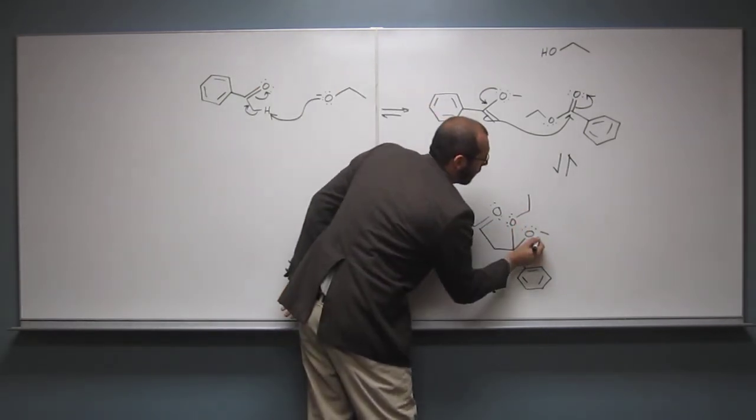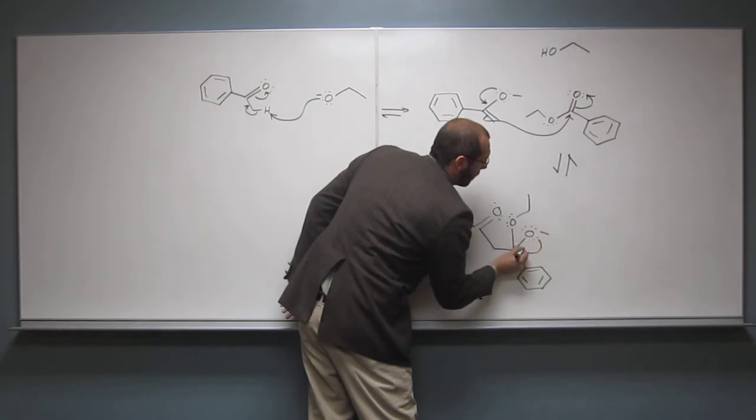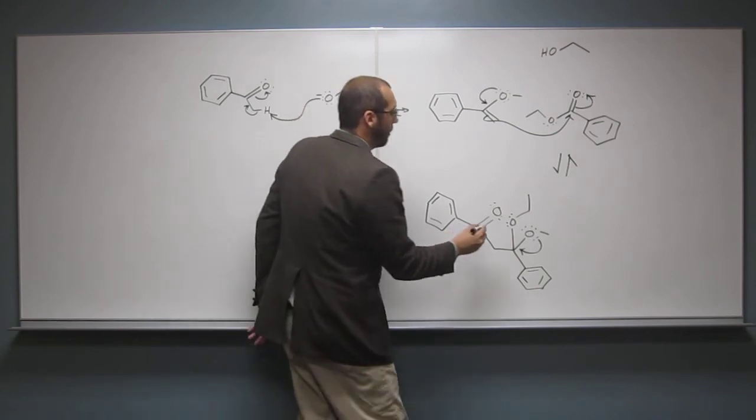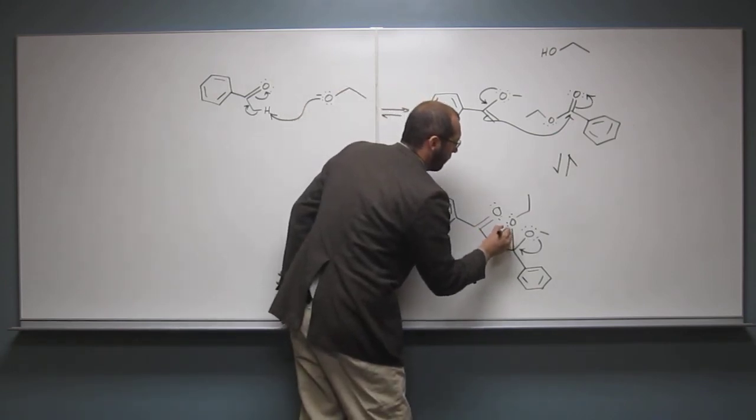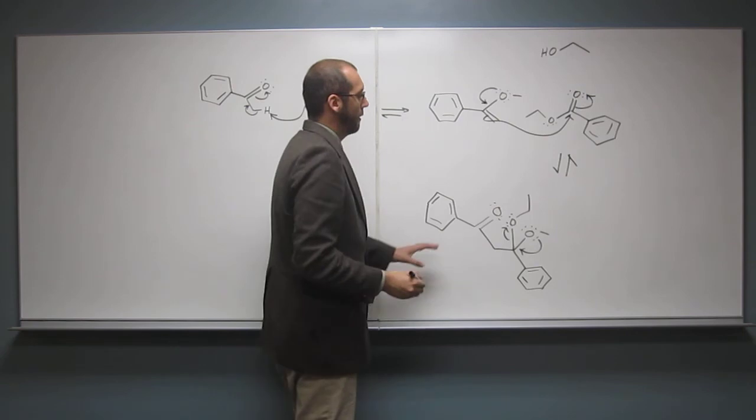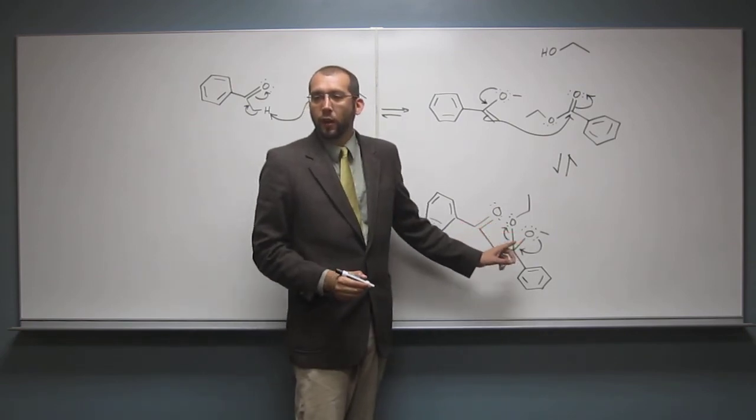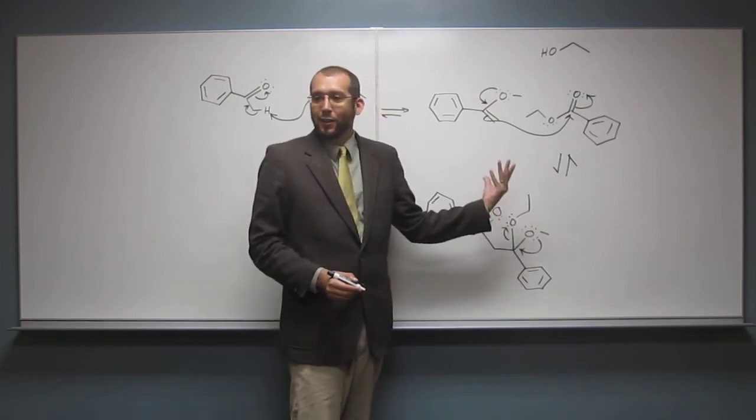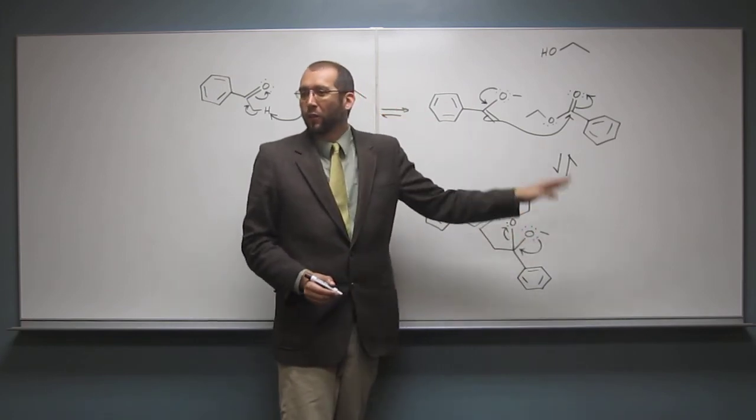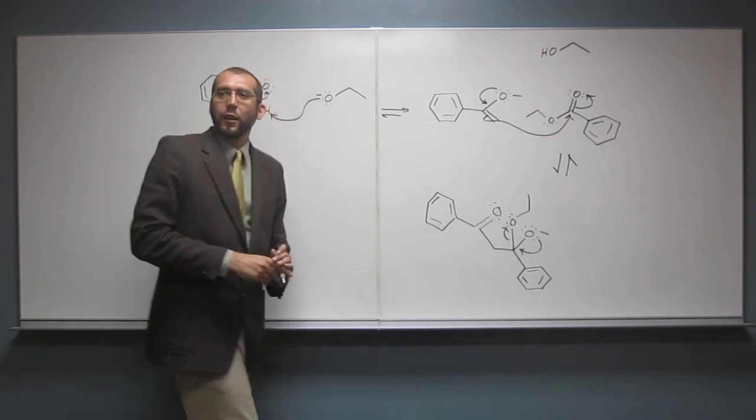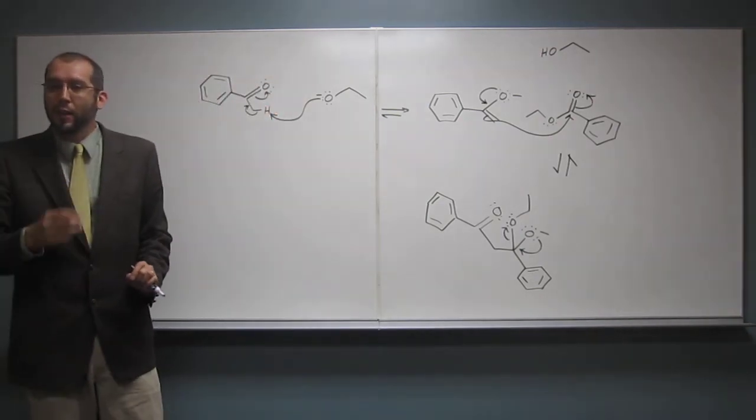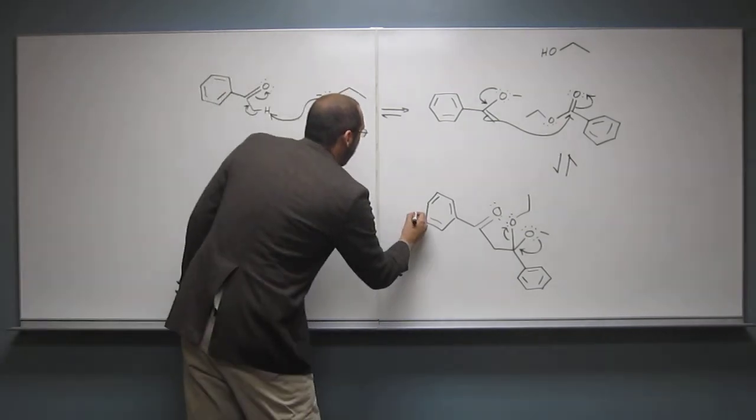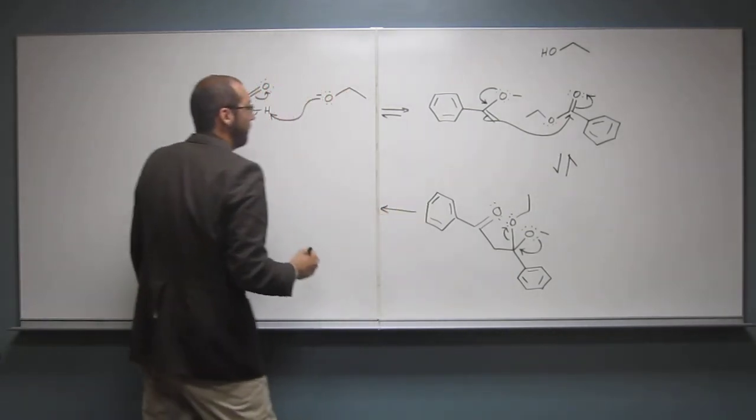So the electrons here are going to collapse down, back down, because of course they want to be sp2 hybridized. That's going to kick off this good leaving group. Remember, we're in a solution of sodium ethoxide. So losing an ethoxide, right, that's what we're about to do, isn't a big deal. There's ethoxides all over the place. So normally you would think that's a bad leaving group, but in the case of having a basic solution, it's not a bad leaving group.